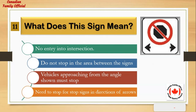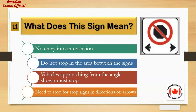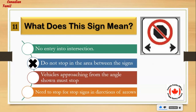What does this sign mean? Number 1: no entry into intersection. Number 2: do not stop in the area between the signs. Number 3: vehicles approaching from the angle shown must stop. Number 4: need to stop for stop signs in directions of arrows. And the answer is: do not stop in the area between the signs.